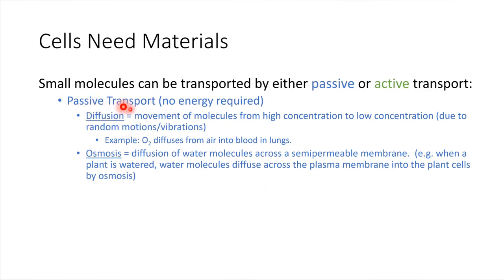Diffusion is the movement from areas of high concentration to low concentration. A familiar example of diffusion would be if you have a bottle of perfume and you open it. If you just give it a little bit of time, eventually, even all the way across the room, you're probably going to start smelling the perfume. That's because the perfume molecules start to diffuse — they spread out from where they were highly concentrated through the air to places where they're less highly concentrated. That's diffusion.